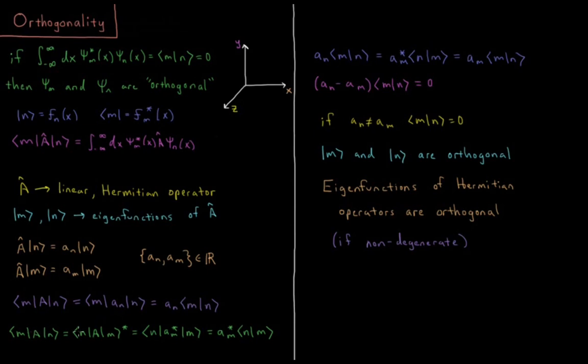and these two things are going to be equal to one another, because by the definition of a Hermitian operator, they are. So we have a_n times the overlap integral ⟨m|n⟩ equals a_m* times the overlap integral ⟨n|m⟩,